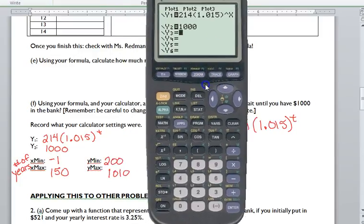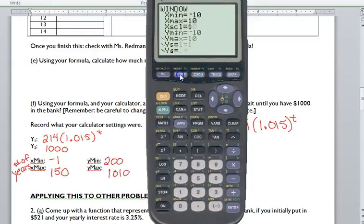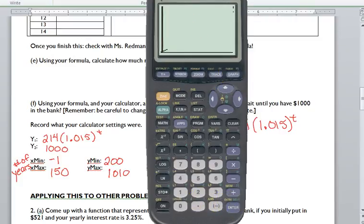Before I even graph it, I'm going to go straight to my window and plug in these values. Negative 1, 150. I'm not going to mess with the scale—that's how frequently your calculator puts a tick mark. That really doesn't matter. My Y minimum is 200. My Y maximum is 1,010. And I'm going to graph them.